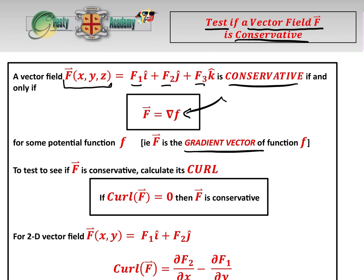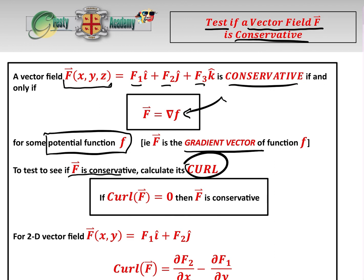In the next video, we are going to be working out what the potential function is once we know that the vector field is conservative. But in this particular video, we're just going to be looking at how to test if the vector field is conservative. To test to see if it's conservative, we calculate its curl.